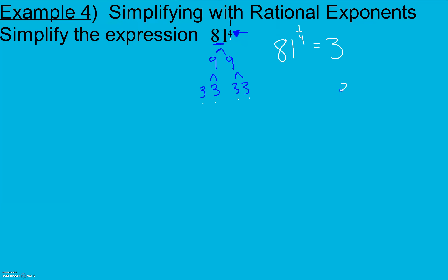Another way of saying that is 3 to the 4th power equals 81. We're just using a little bit of a reciprocal on the exponent. So 3 is our solution here.